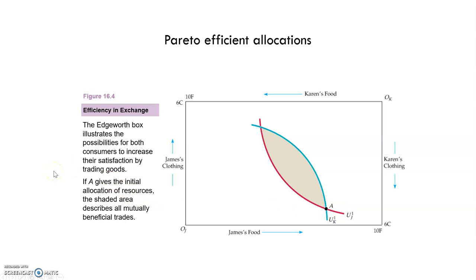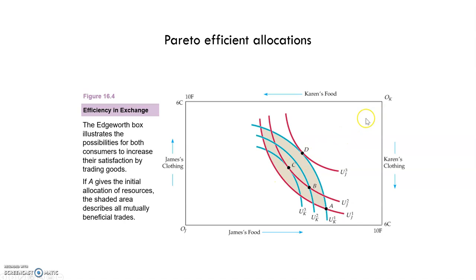Here we find the second indifference curve for James and the second one for Karen, then the third one for James and the third one for Karen. As we can see, James goes from the origin to this part of the Edgeworth box. The third indifference curve gives him more satisfaction than the first one. The basket B will provide more satisfaction to James than basket A. Points C and B give him the same satisfaction, because they are both on the same indifference curve for James.